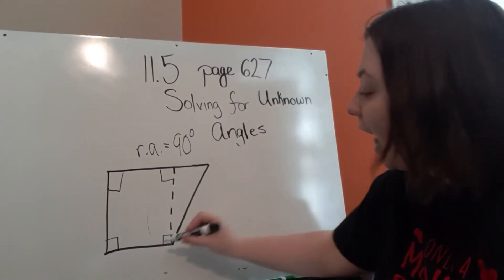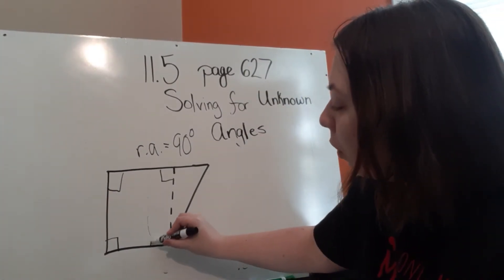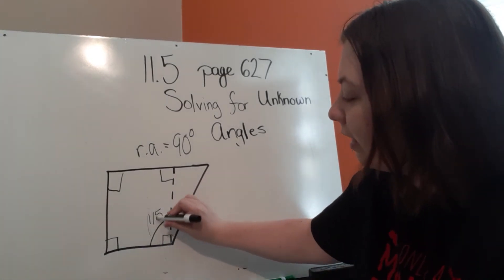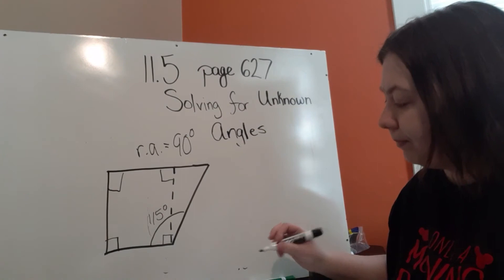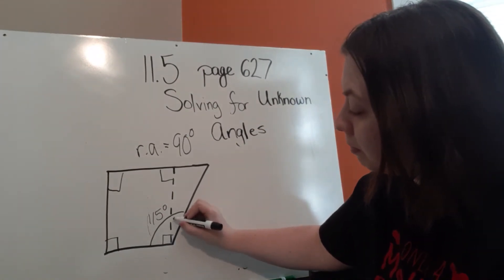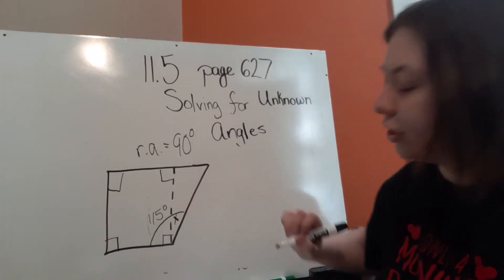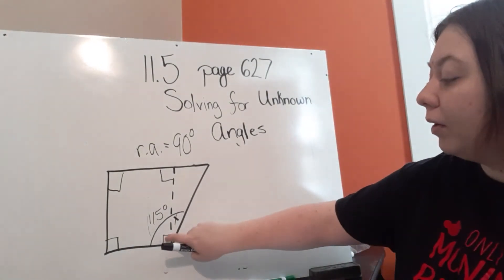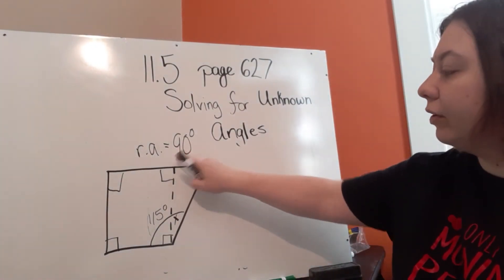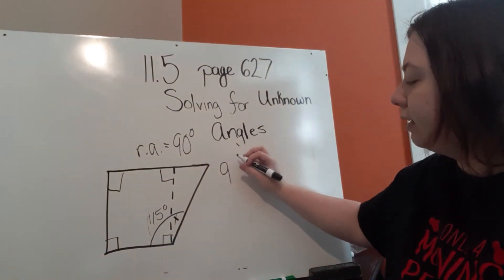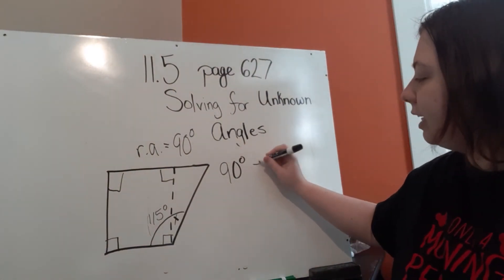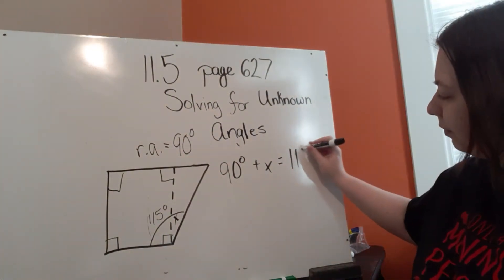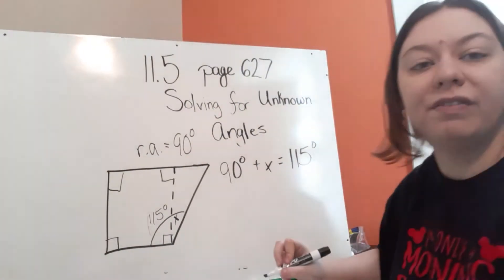Now, they're telling you that this whole vertex here is 115 degrees. And that this smaller section is X. Now, again, we know, since this is a right angle, that we have 90 degrees. So 90 degrees plus X should give us 115 degrees.